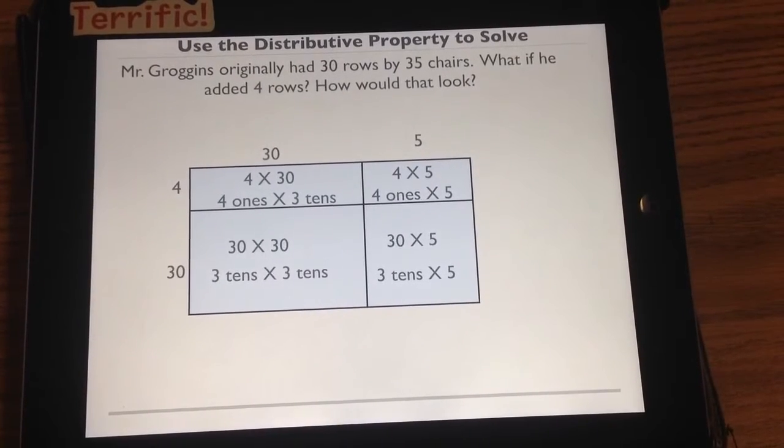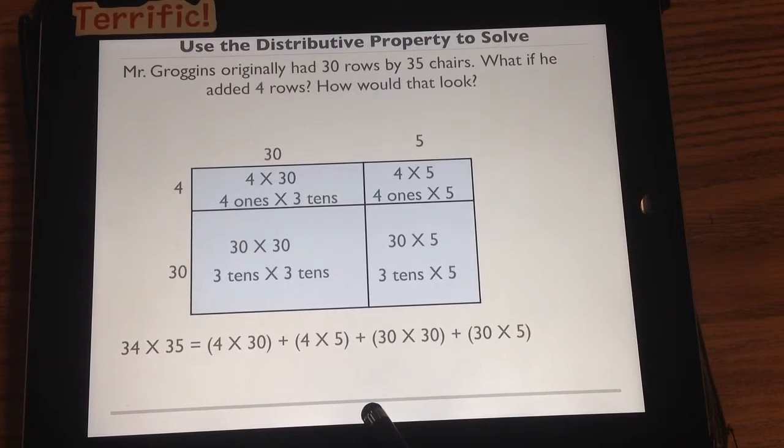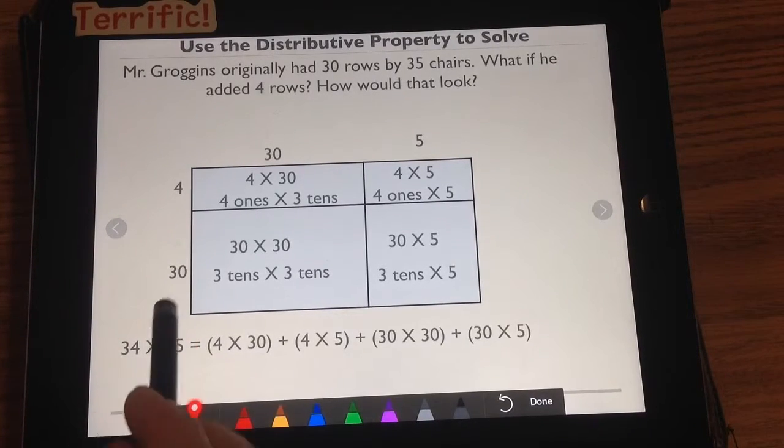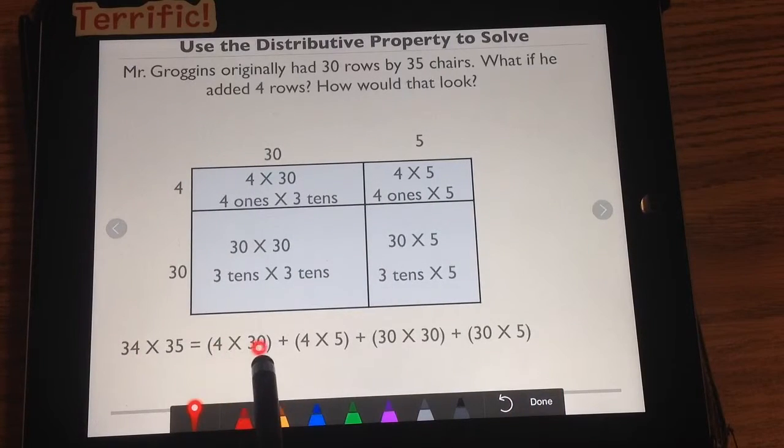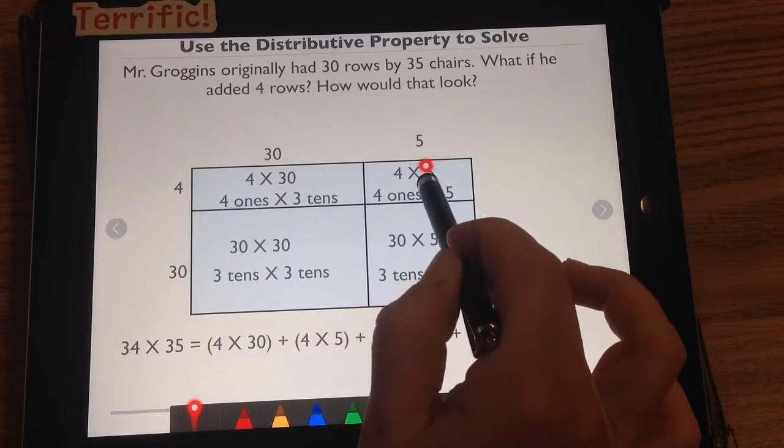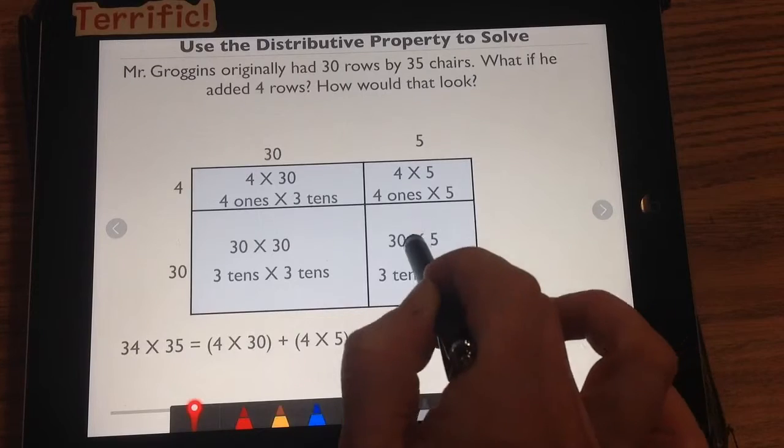Now, to use a distributive property, it would look like this. We have our 34 times 35, and we broke it down into 4 times 30, right there. 4 times 5, right there. 30 times 30, right there. 30 times 35, right there.